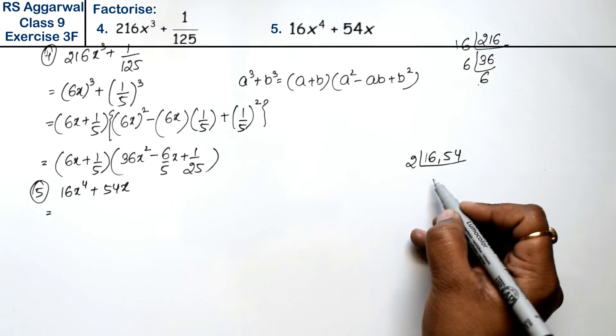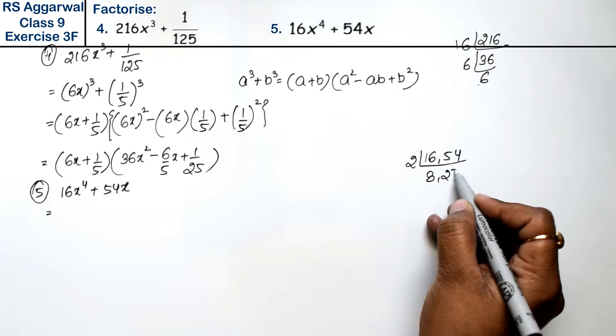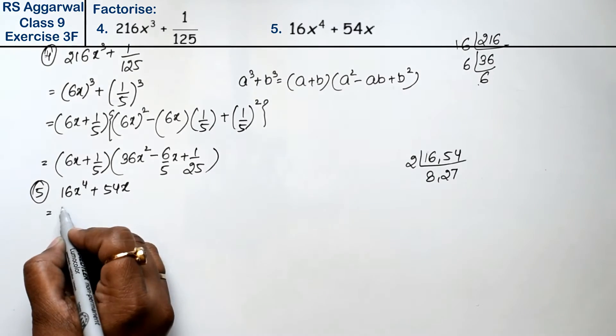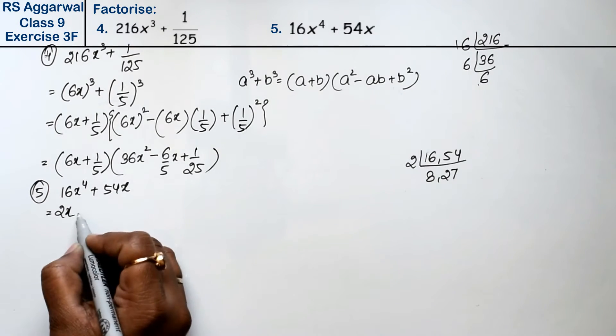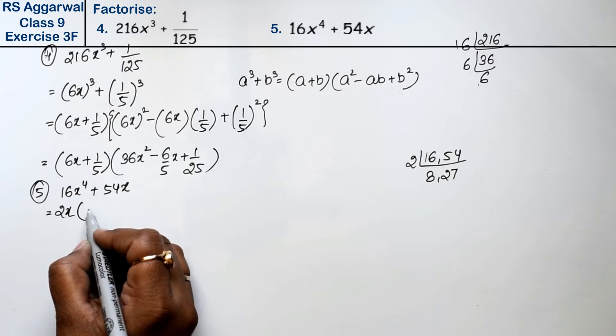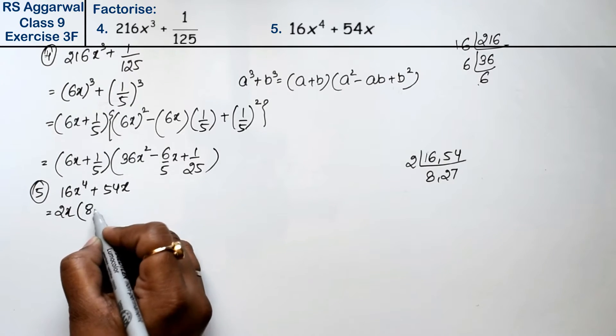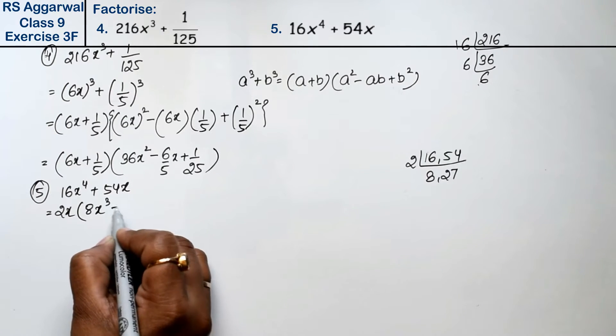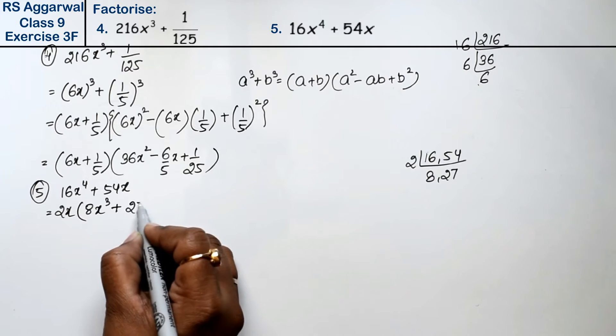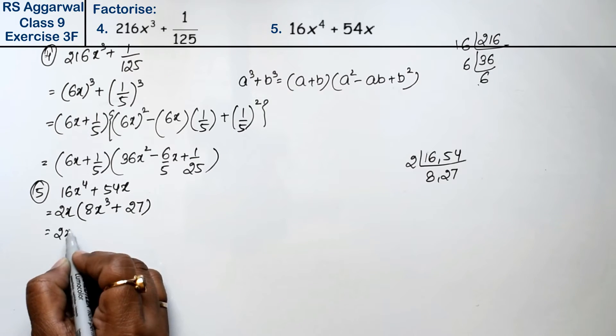If you see, 2 divides 16, 2 divides 4, and 2 divides 54. Only 2 is common and 1x is common. So 2x times 8x cube plus 27.